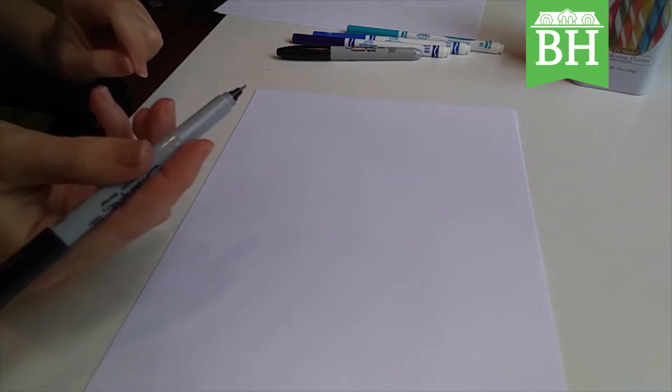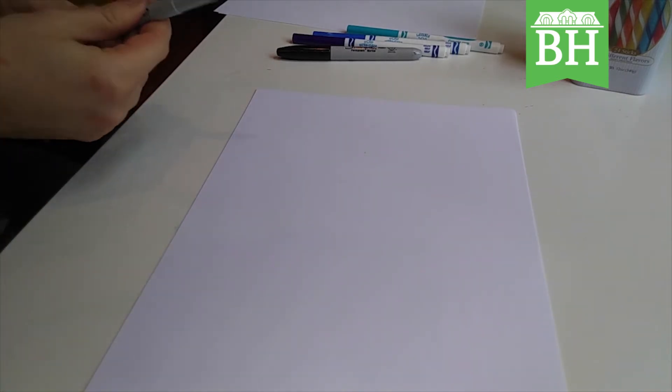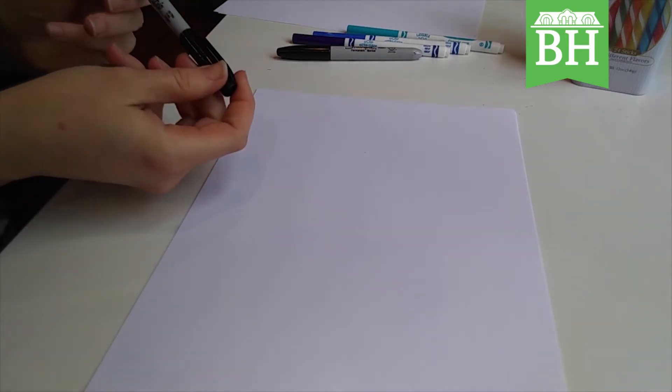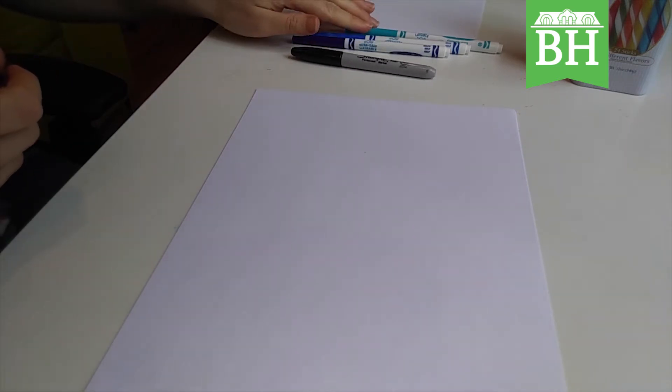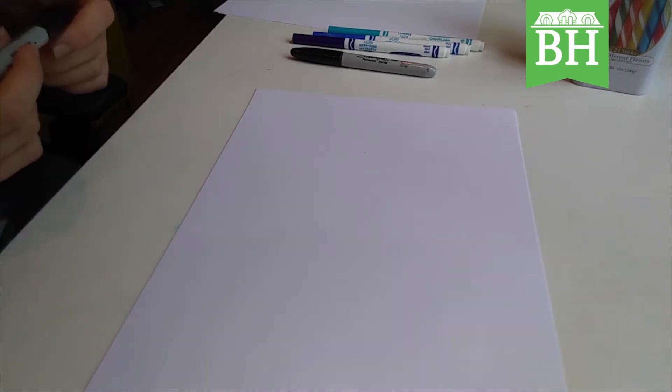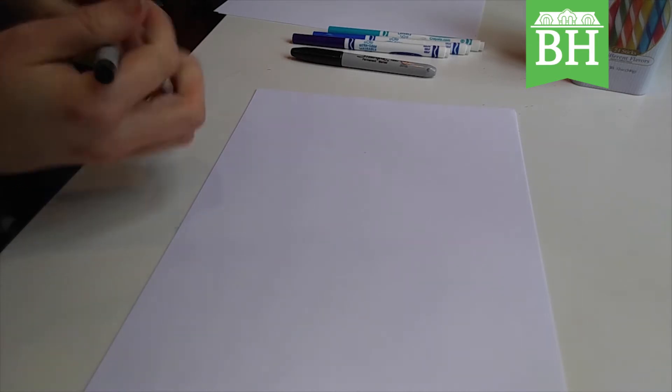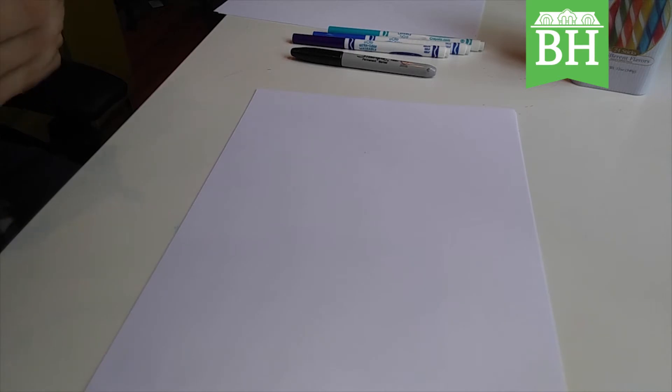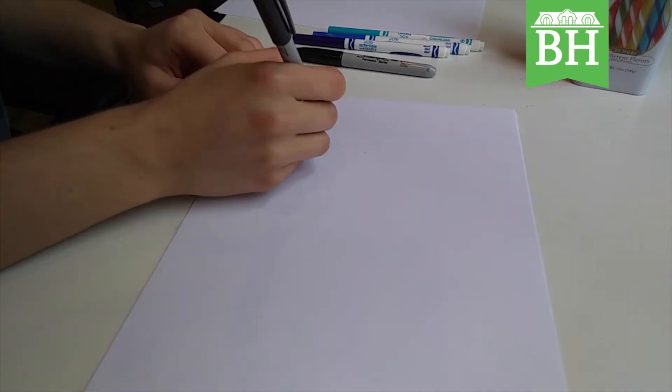First thing we're going to do is gather our materials. I've got an ultra fine point Sharpie, thick black Sharpie, and some washable markers. You can use markers, pens, pencils, whatever you're comfortable with. I'm just going to go ahead and draw with my Sharpie. If you want to use pencil first, outline everything in pencil and then erase it, you can. I'm just going to go for it.